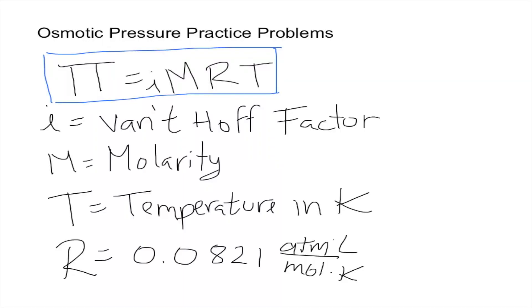In this video, I'm going to solve practice problems on osmotic pressure. As a quick reminder, the formula to calculate osmotic pressure is π = IMRT, where I is the Van't Hoff factor, M is the molarity of the solute, T is the temperature in Kelvin, and R is our constant.